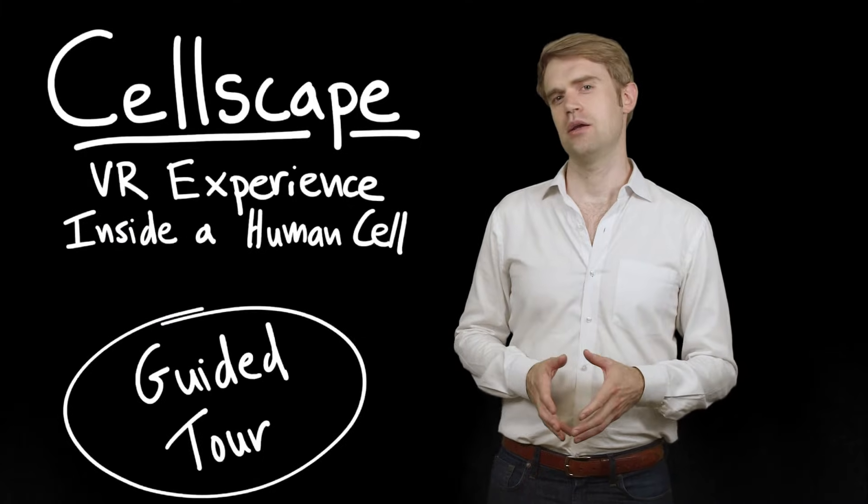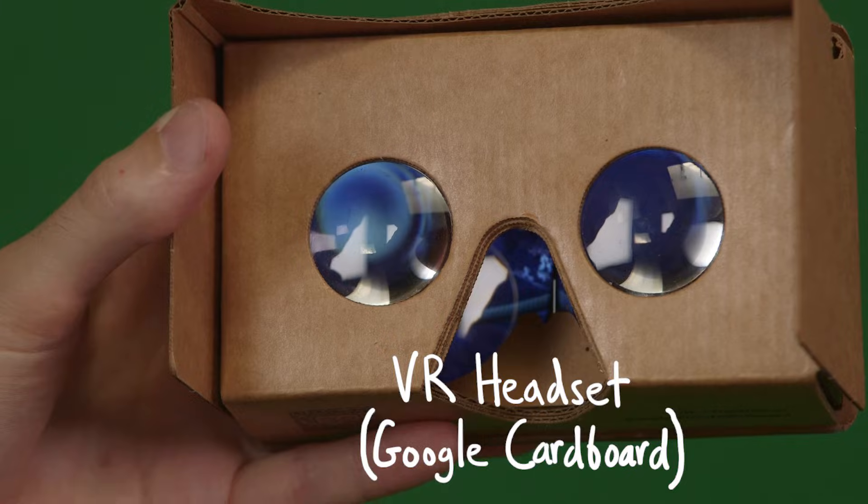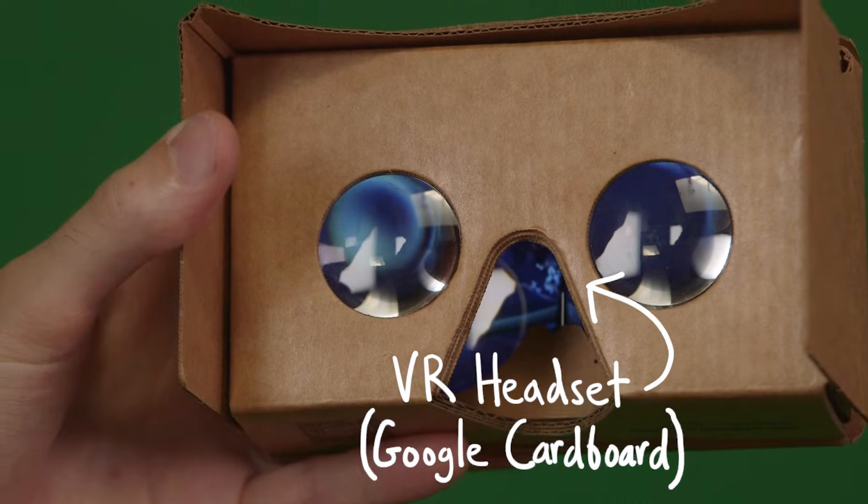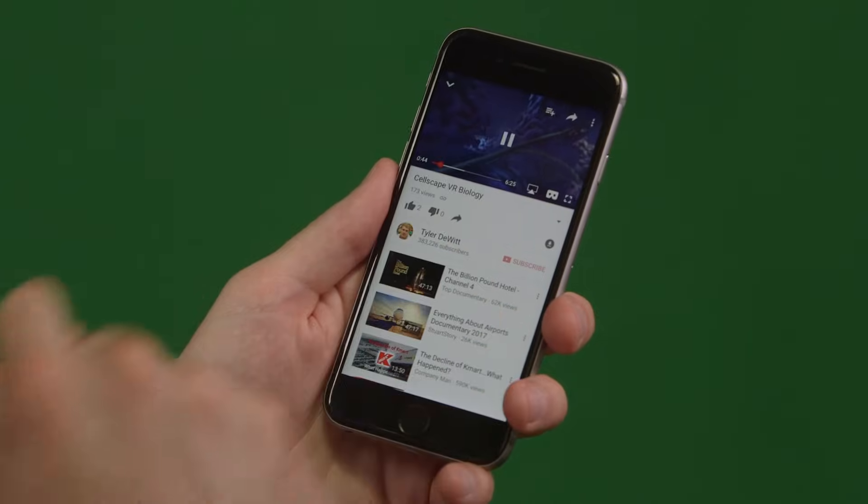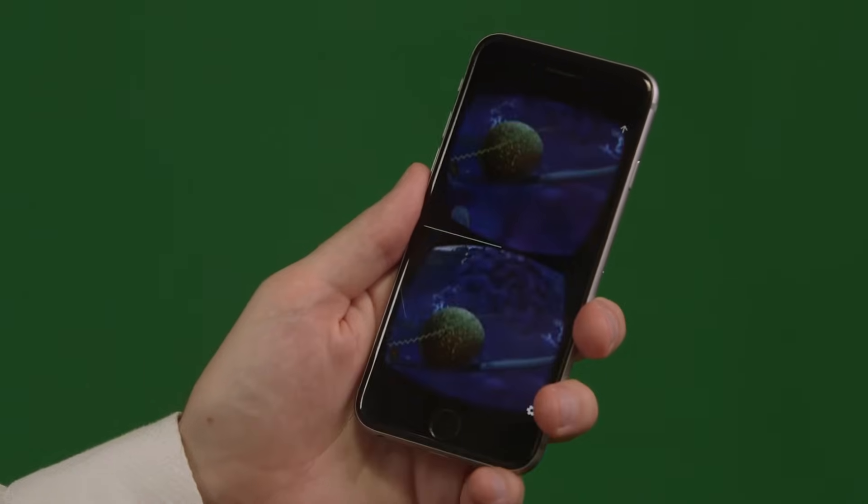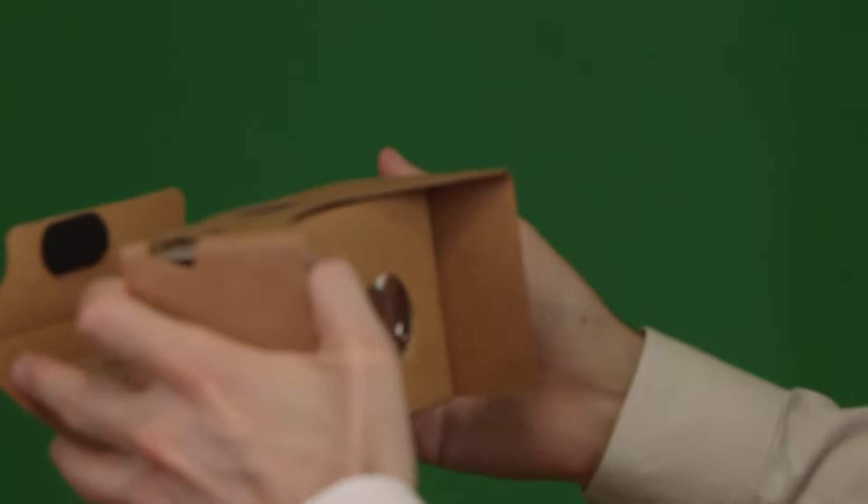If you haven't seen it yet, Cellscape is best experienced with a VR headset, like Google Cardboard. Pull up the video on YouTube on your phone, click the viewer button, and then place the phone in a VR headset.